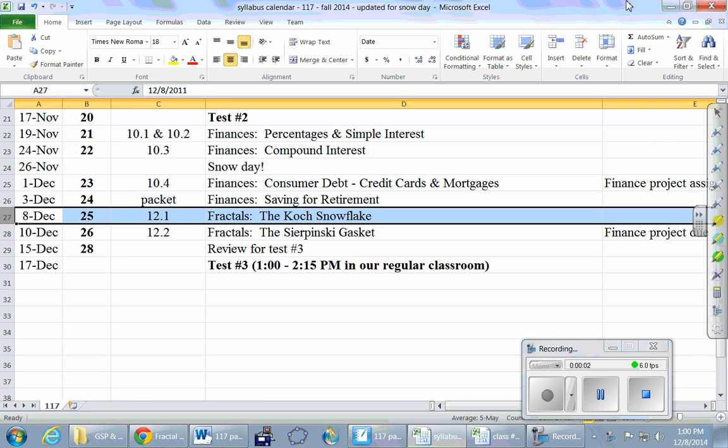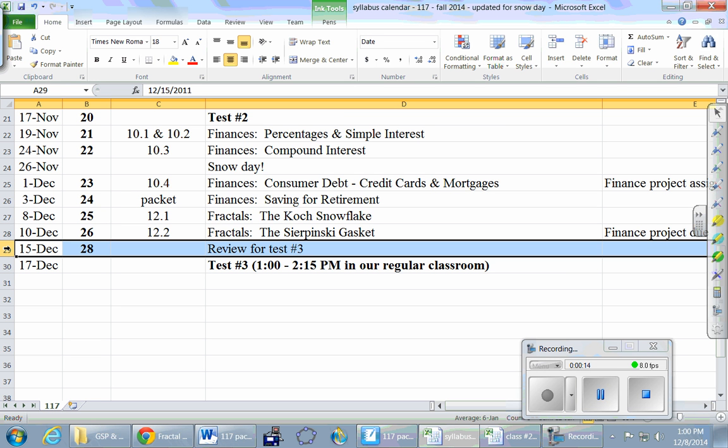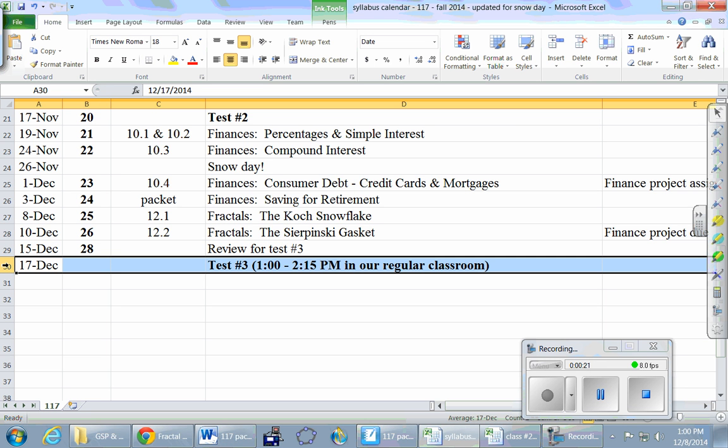Let's take a look at our calendar. Today, December 8th, we talk about fractals today and Wednesday. Today and Wednesday are our last two days of material. One week from today is our last class, a review day. This week will be the end of the new material.